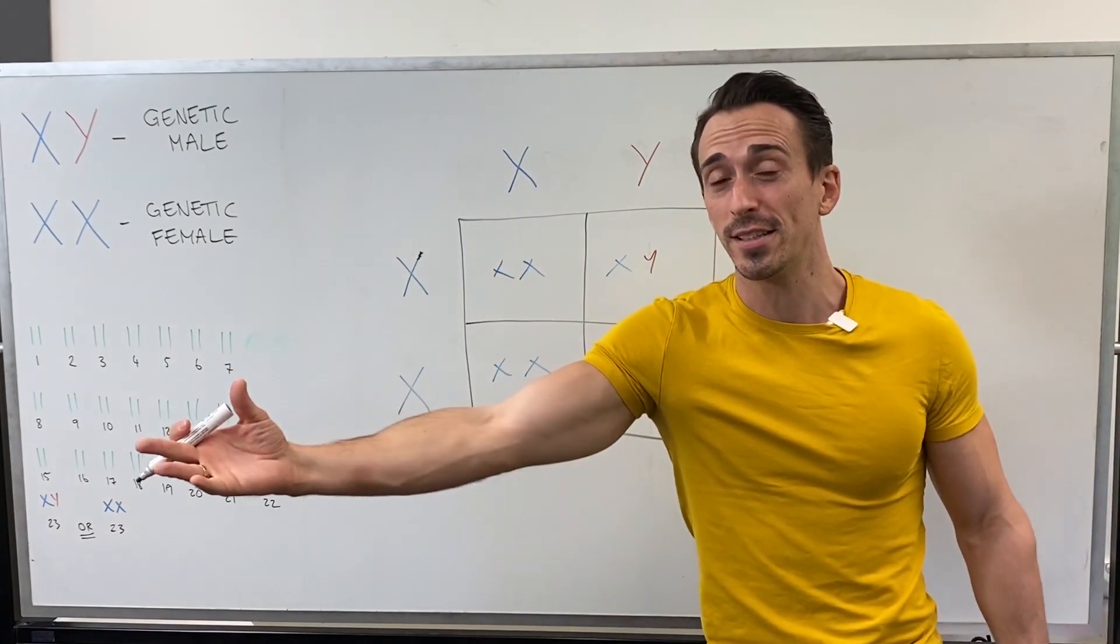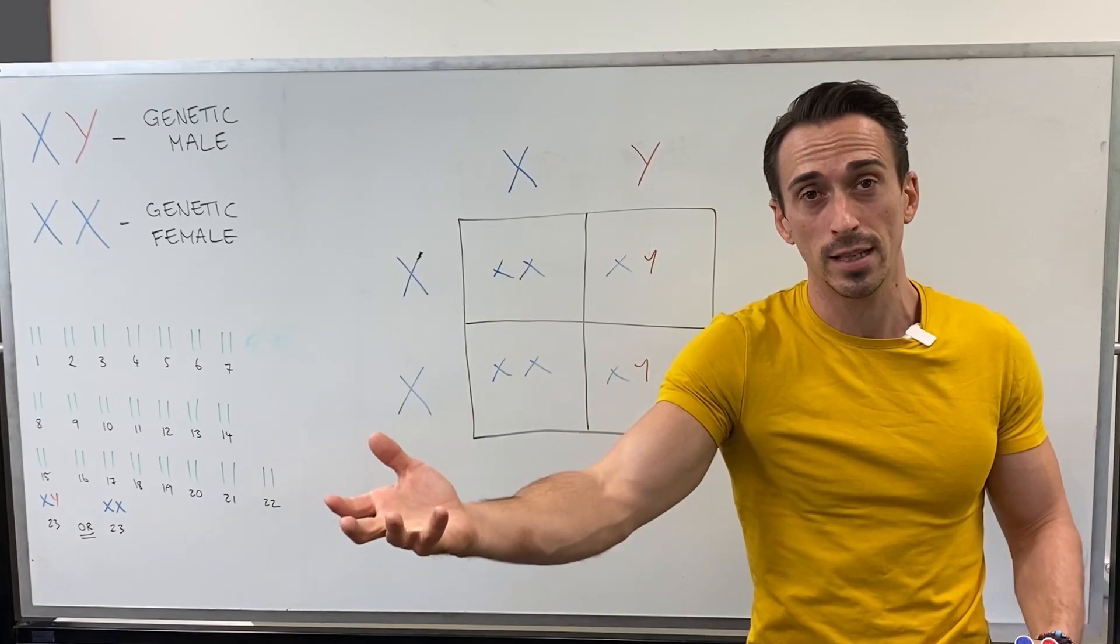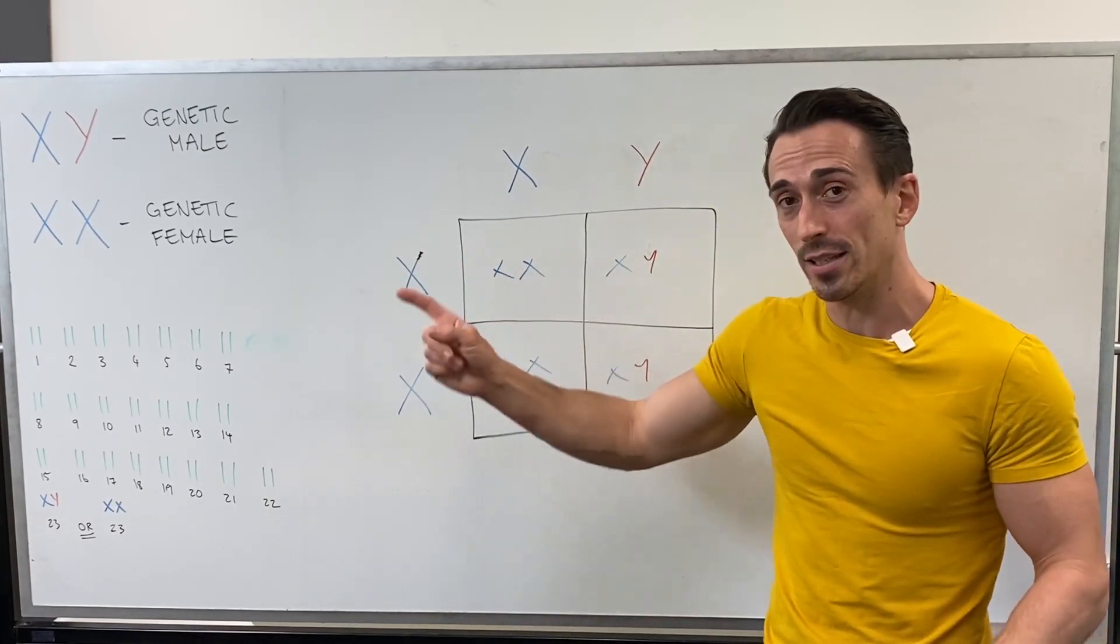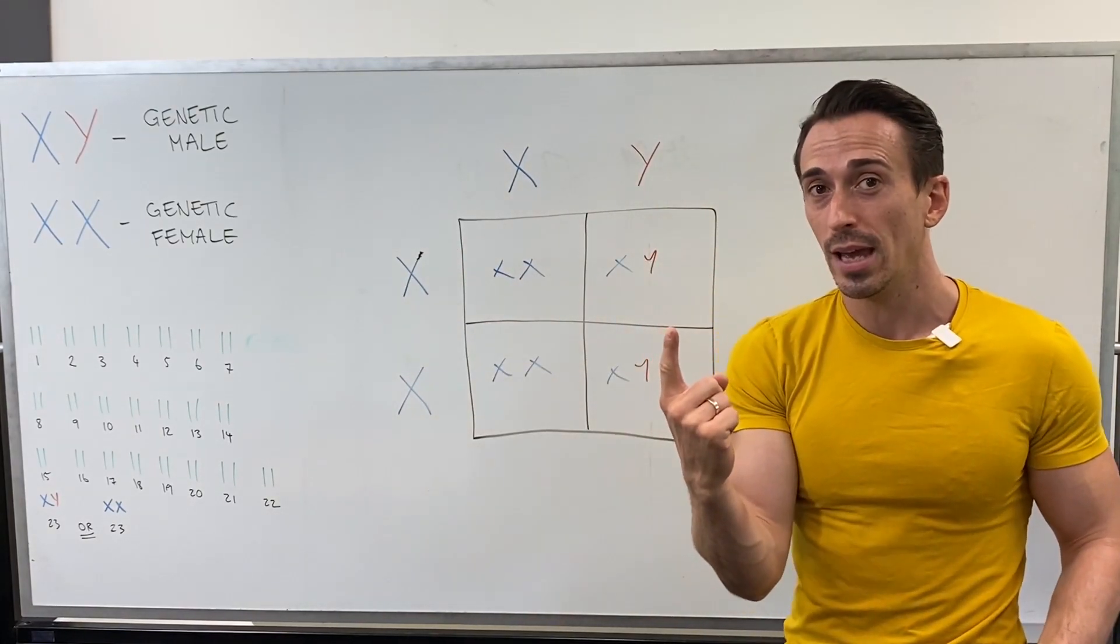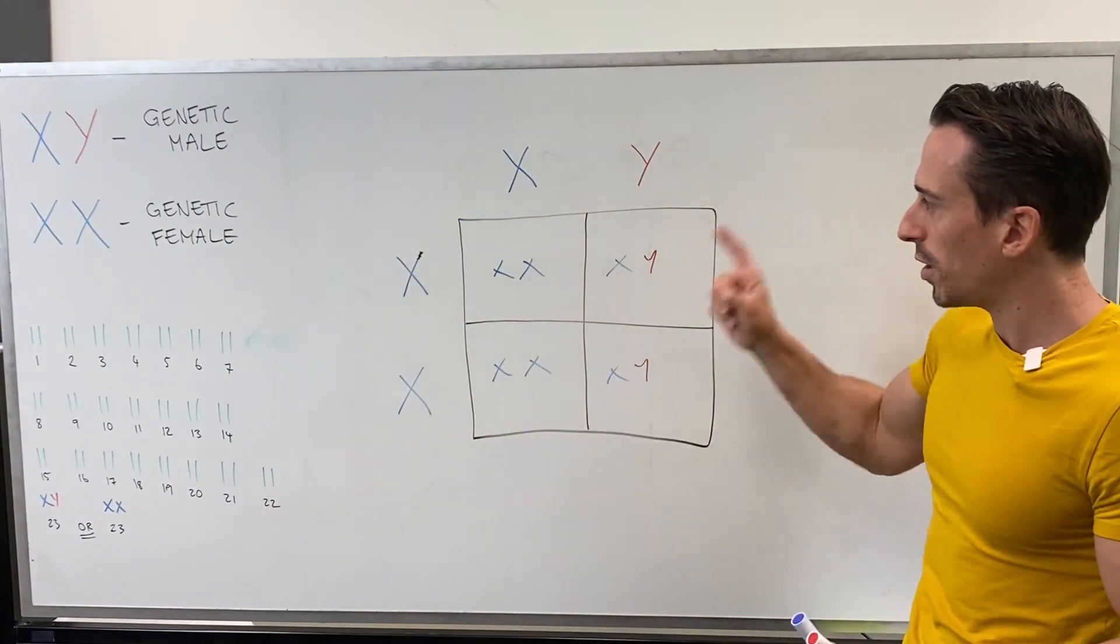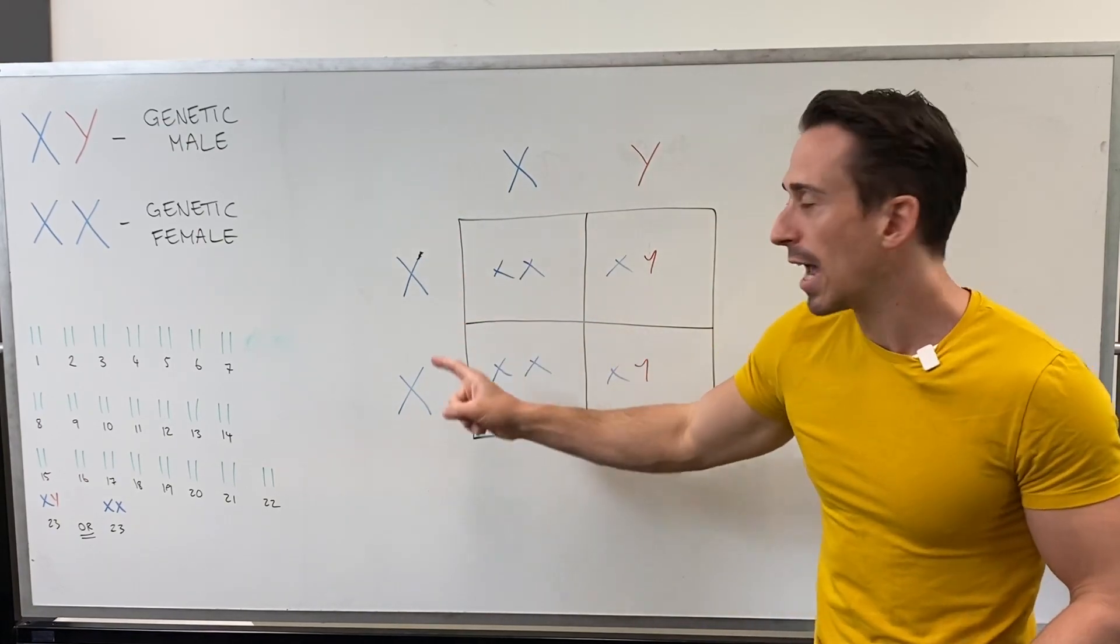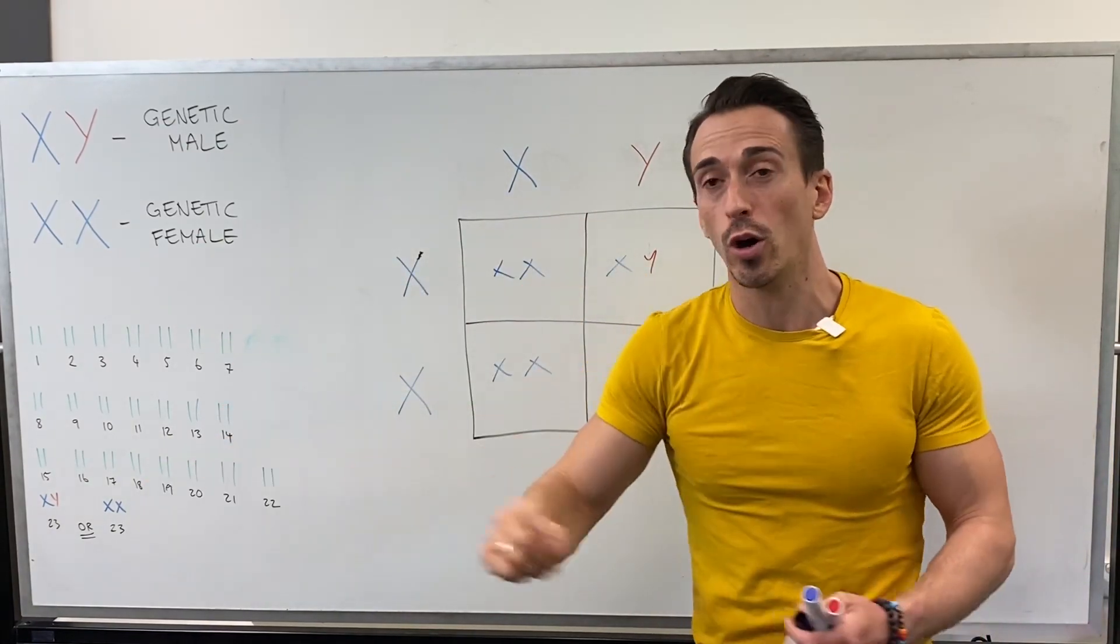So is mum manifesting the disease? No, because mum would need to have two of those copies to manifest the disease. So she's heterozygous, that means only one copy, and she's a carrier for the disease, not manifesting it. So what now is the likelihood of mum passing this haemophilia-based gene off to her offspring?